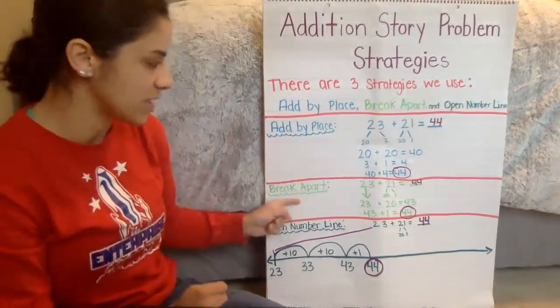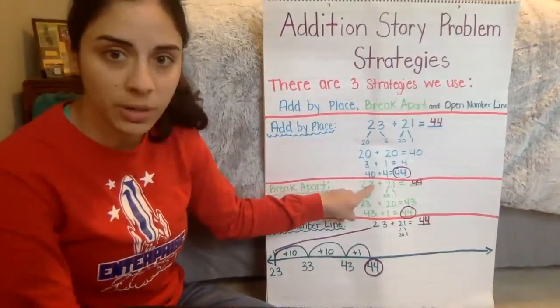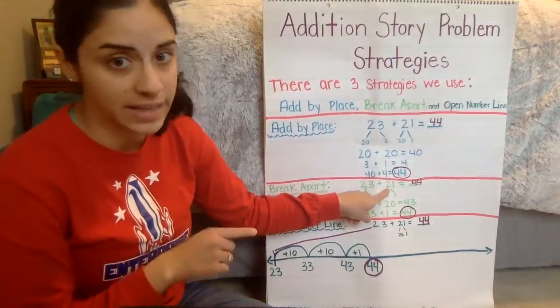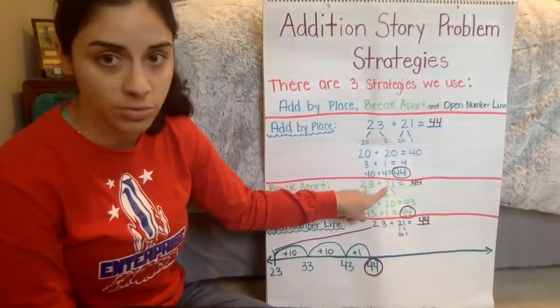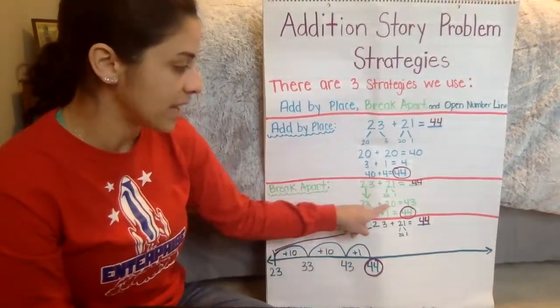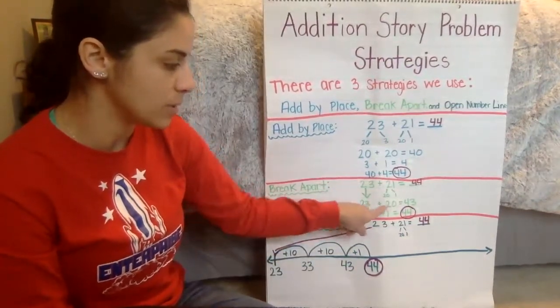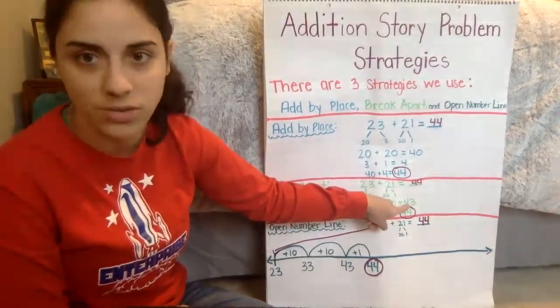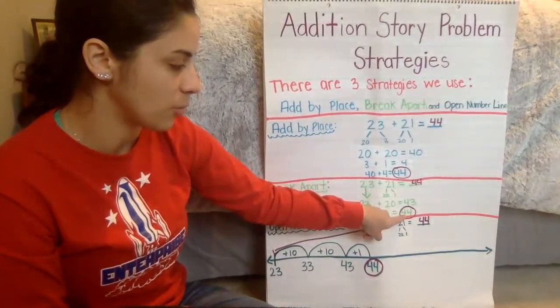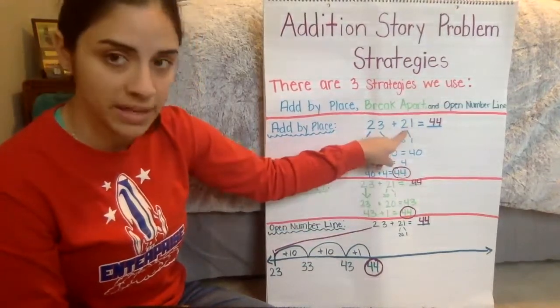When we do this using break apart, remember in break apart, we bring the first whole number down, and we only break apart the second number. So how many tens are in 21? There's 20, and there's one one in 21. We're going to add the tens to 23, which would be 23 plus 20 equals 43, and then add the ones. 43 plus 1 is 44, and as you can see, we got the same answer.